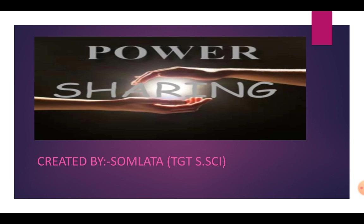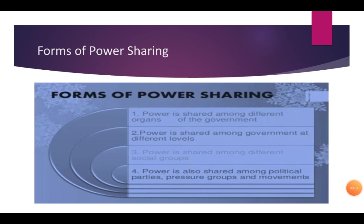Today we are going to talk about the forms of power sharing. There are four forms of power sharing. One, power is shared among different organs of the government — यानी एक ही level पर different different organs के बीच में power को share करना, जिसे हम horizontal distribution भी कहते हैं. Second, power is shared among governments at different levels, जिसे vertical distribution कहते हैं. Power को different social groups के बीच में भी share किया जाता है, और different political parties, pressure groups और movements में भी power share की जाती है.